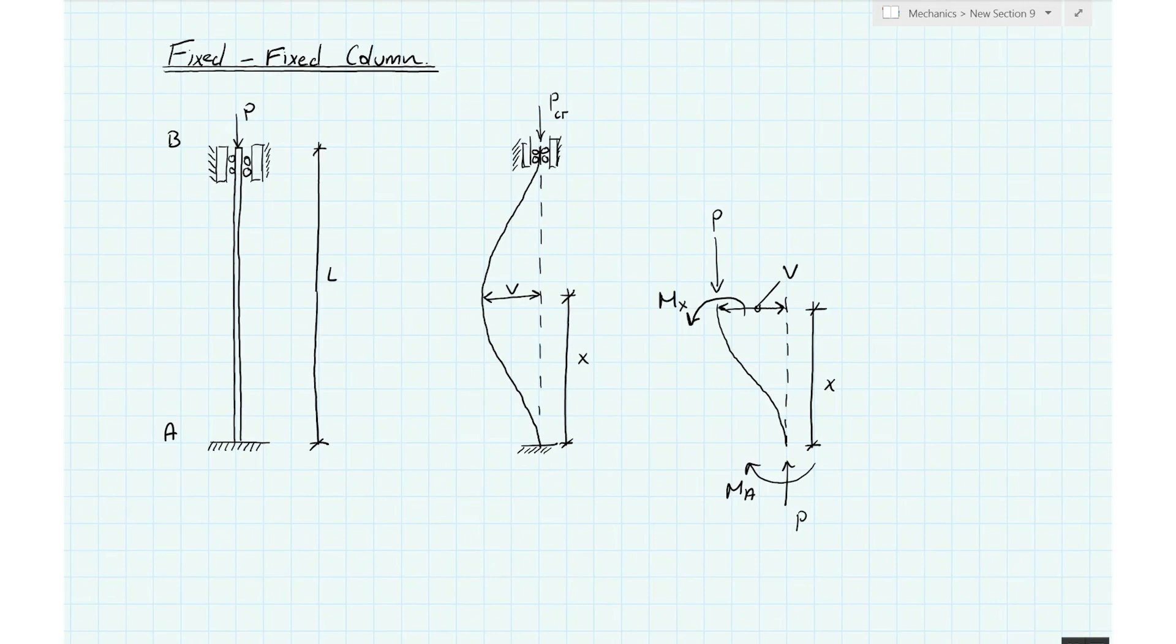Okay, so now we're going to look at the fixed-fixed column. Same setup as before. This time you notice in the schematic of the column here, we can see up at point B we have a support arrangement that allows the column to deflect vertically, so to get shorter as a column would, but it's stopping the column from rotating. So it's the same as the support at point A except it allows for vertical movement at the top of the column.